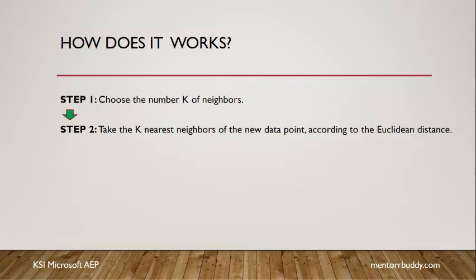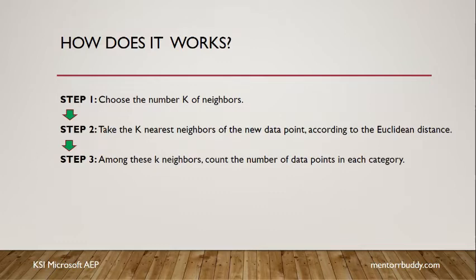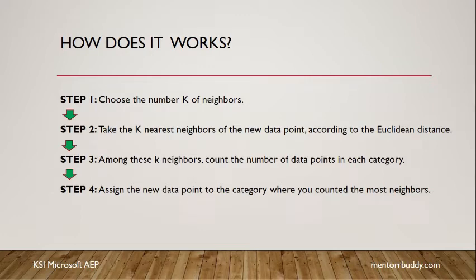Once the number of neighbors is set, the KNN algorithm finds that number of neighbors using the Euclidean distance — though Manhattan distance can also be used. Then, in step three, we count how many neighbors belong to which category. For example, with seven neighbors, three may belong to category one and four to category two. Step four is to assign the new data point to the category with the most neighbors.